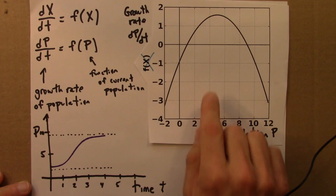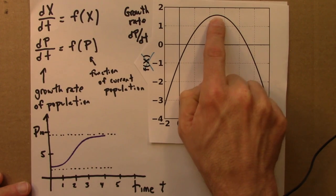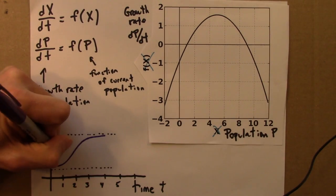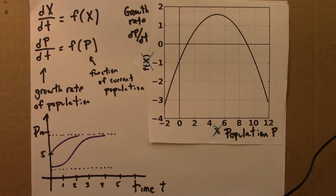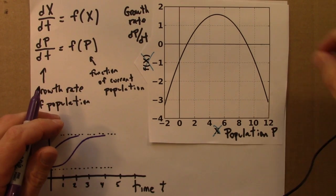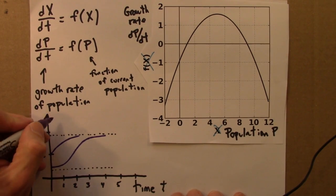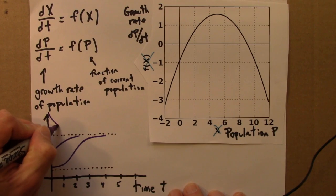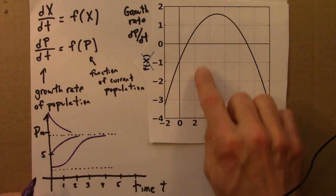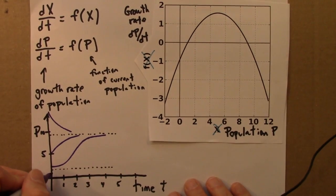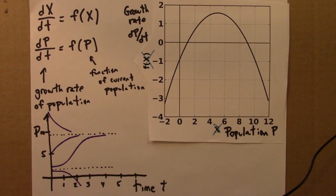If I started at 5, I would also increase and approach 9. It's going to look something like this. If I start at 12, I'll decrease and hit 9, approach 9. And if I start at a little less than 1, I would decrease and go to 0.